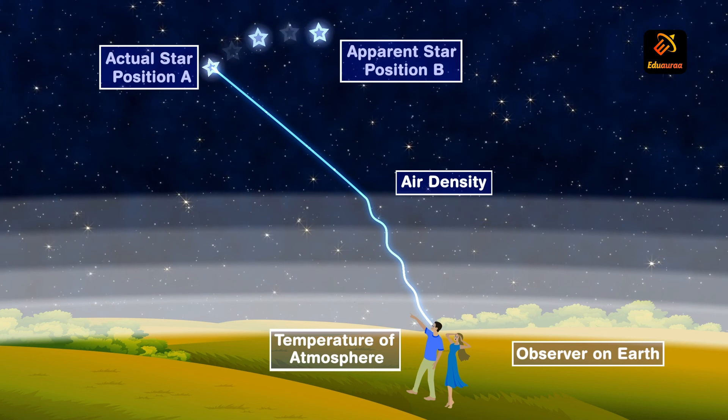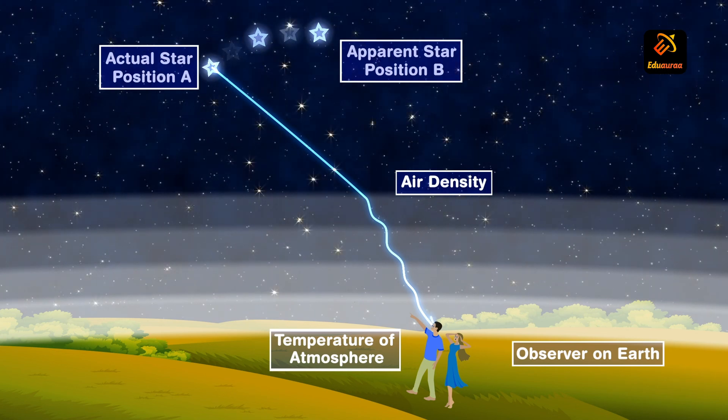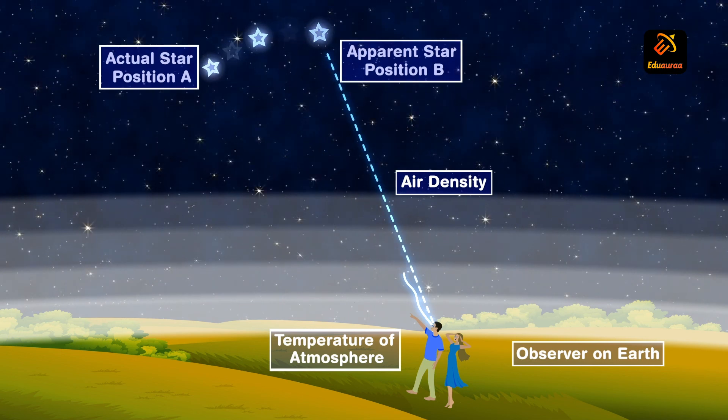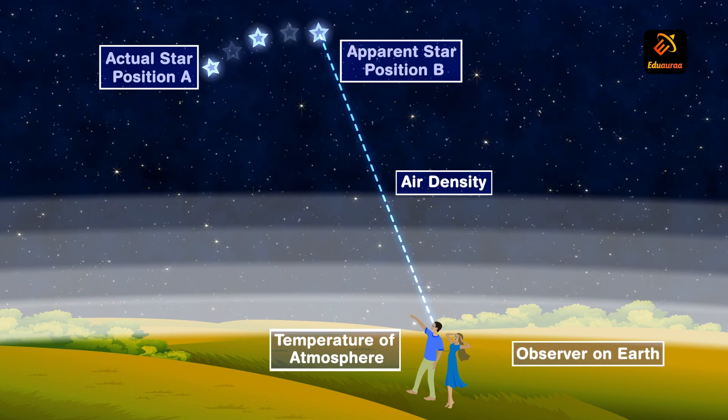Hence, the refractive index of the atmosphere keeps changing. As a result, apparent position and brightness of star changes, which gives the twinkling effect.